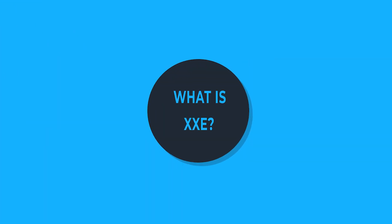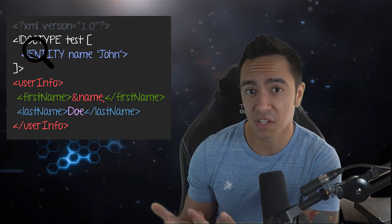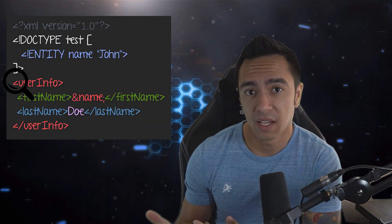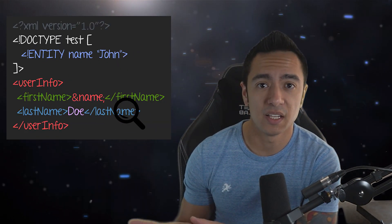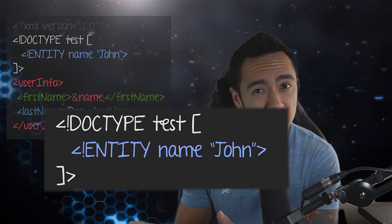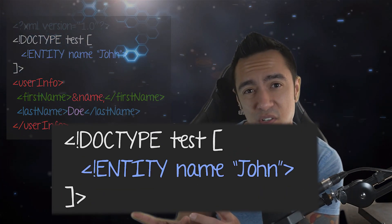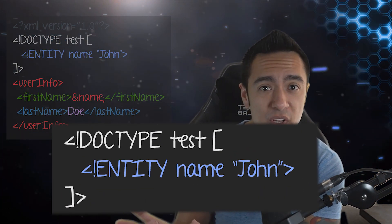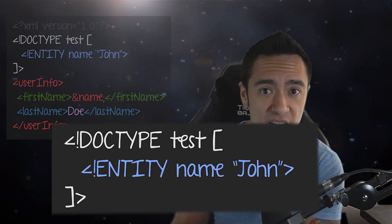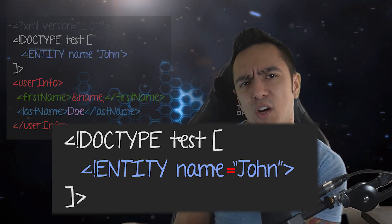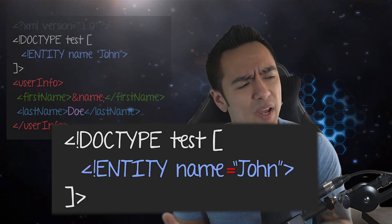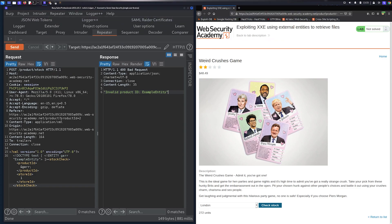External entity injection, or XXE, is a vulnerability that's exploitable due to a misconfiguration in the application's XML parser. The application parses XML, and XML by nature allows for the declaration of things called entities. These entities are essentially references to other points in the XML document — you could think of an entity kind of like a variable.